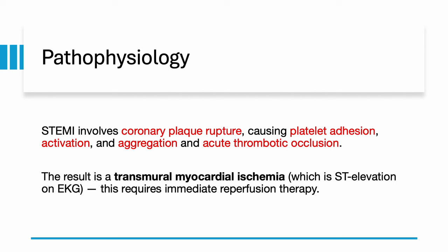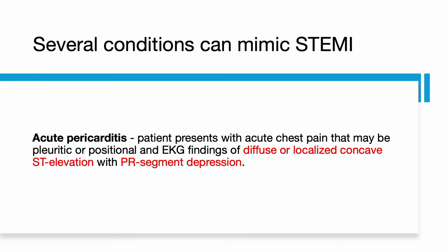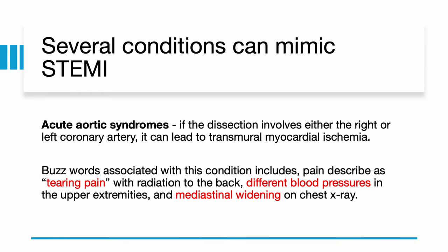This requires immediate reperfusion therapy. However, there are several conditions that can mimic an ST elevation MI. One of those conditions is acute pericarditis. Patients present with acute chest pain that may be pleuritic or positional, and the EKG findings show diffuse or localized concave ST elevation with PR segment depression. Another condition that can mimic STEMI is acute aortic syndrome.